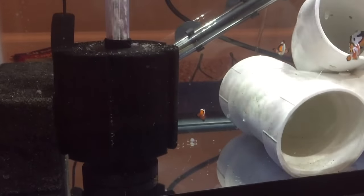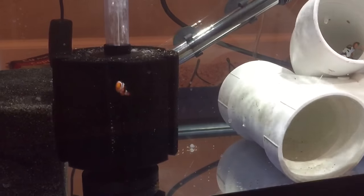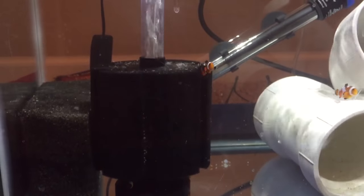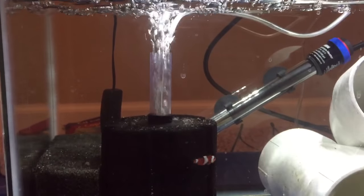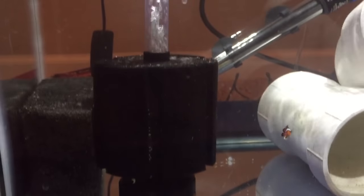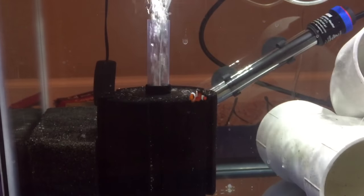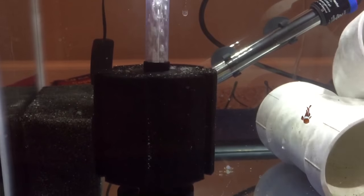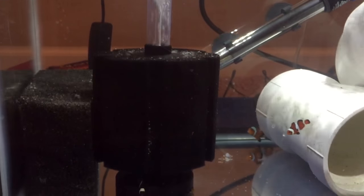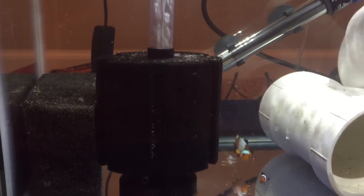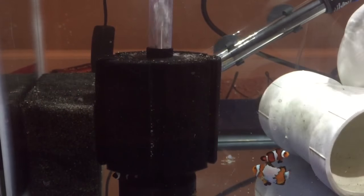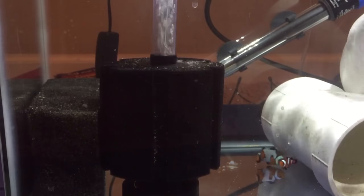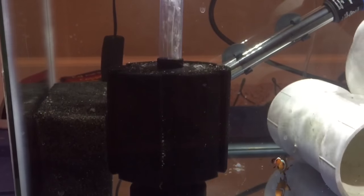This little foam filter basically is a simple little pump that blows water through it, goes through the bottom and sucks in all the debris. This foam sponge not only holds the beneficial bacteria but it also pulls in all the garbage.